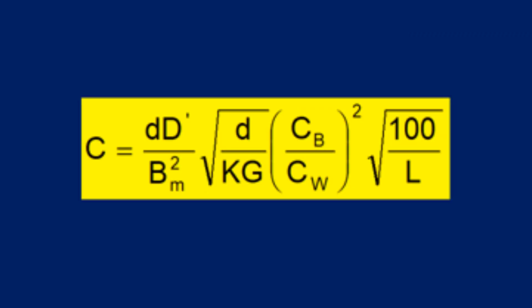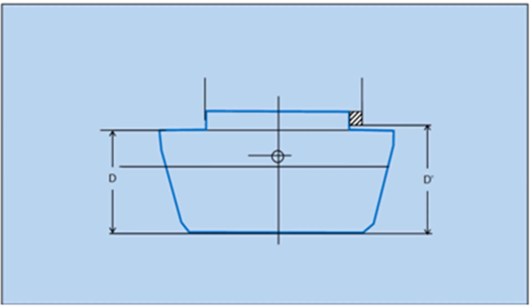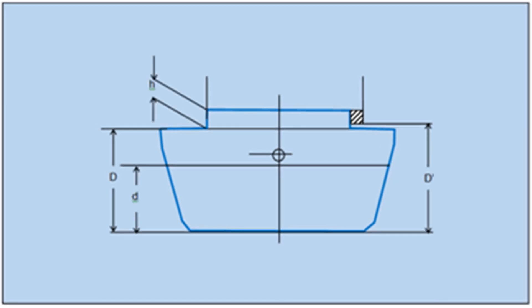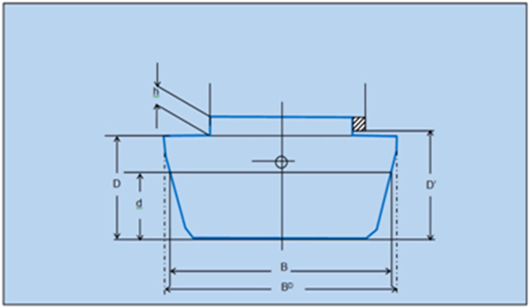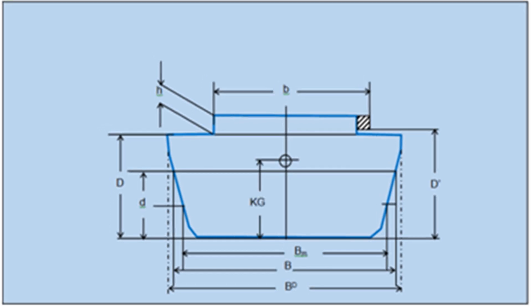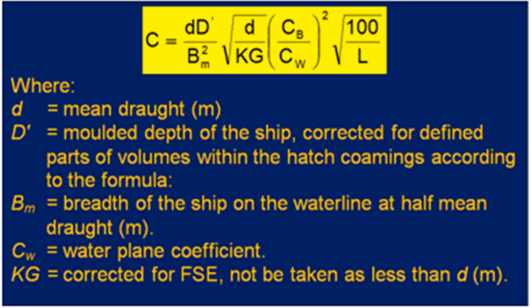Before we list down the criteria applicable to these ships, we must know that there is something called constant C on such ships. This constant C is dependent on various parameters: the molded depth of the vessel, the draft, the beam at midship, the block coefficient, the waterplane coefficient, the KG, and the length of the vessel.